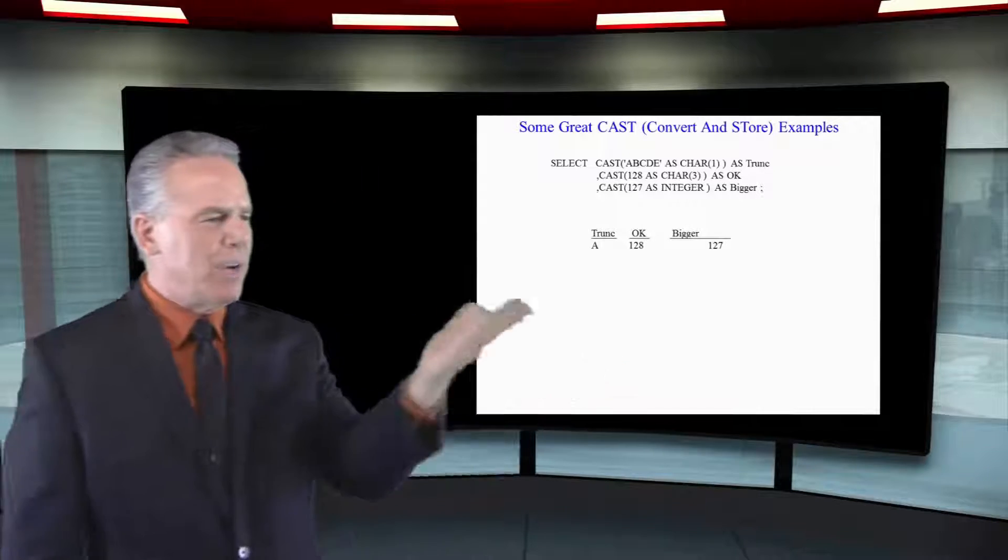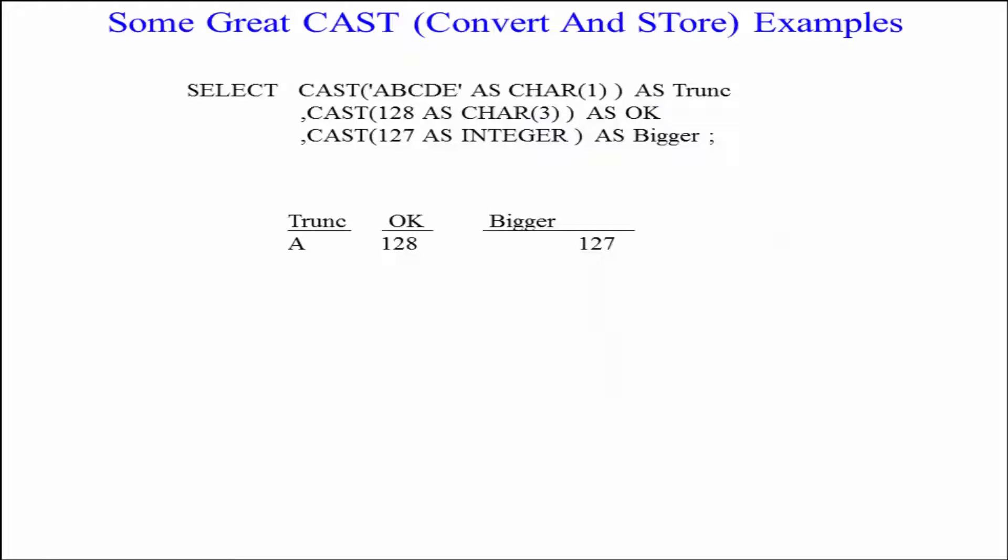Secondly, I say I want to CAST 128 as character 3. And you see 128, but notice it's lined up on the left side. It's no longer a number. It's character data, like your name.